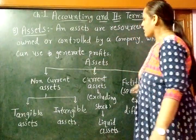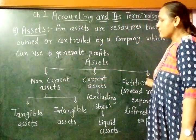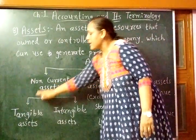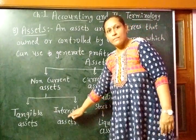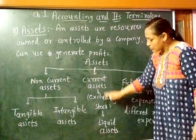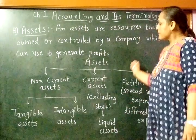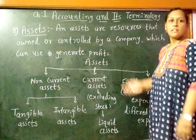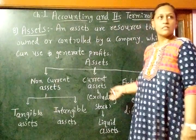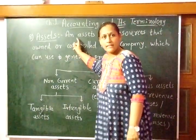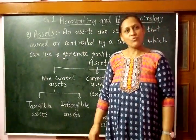To summarize, the total asset is divided into three categories: non-current assets, current assets, and fictitious assets. Non-current assets are further divided into tangible and intangible assets. If we exclude stock from current assets, it is called liquid assets. Fictitious assets have a realization value of zero. In our next video, we are going to see some more terminology of accounting. Thank you for watching this video.